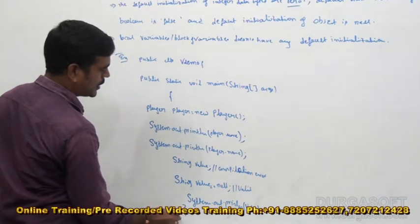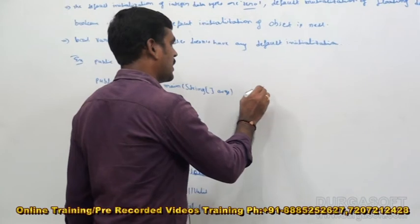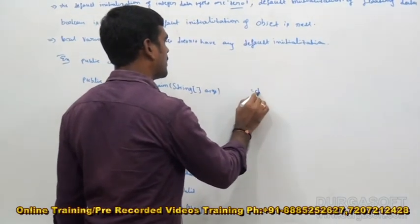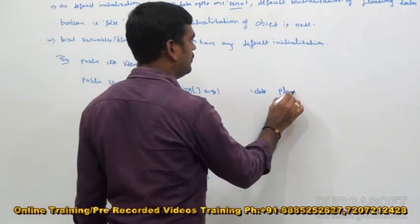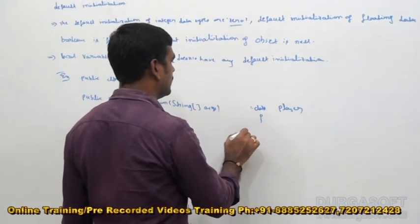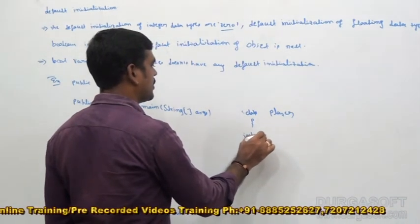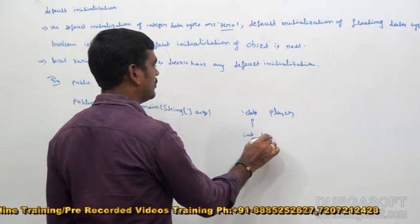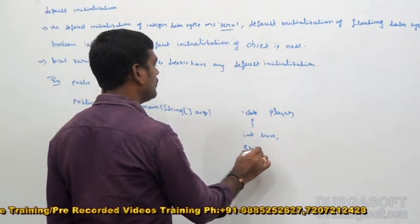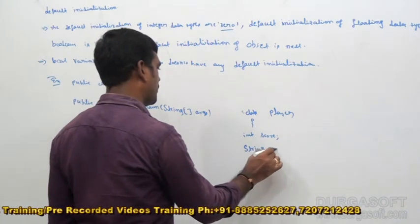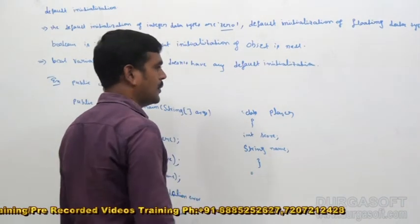Close the method, close the class. Here we can develop the Player class. Class Player — under that, int score. The next, string name. Close it.